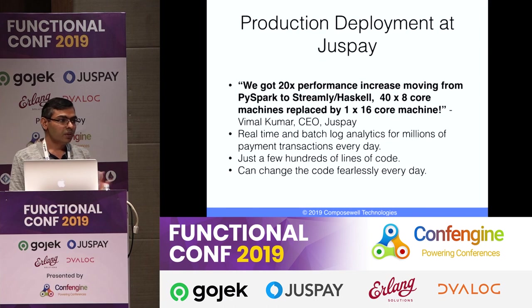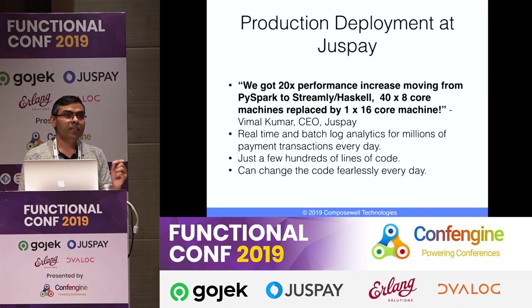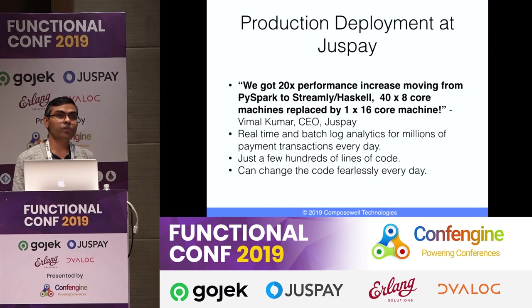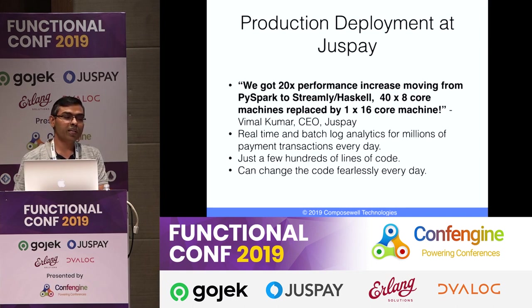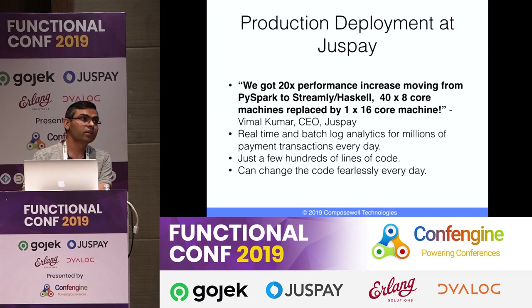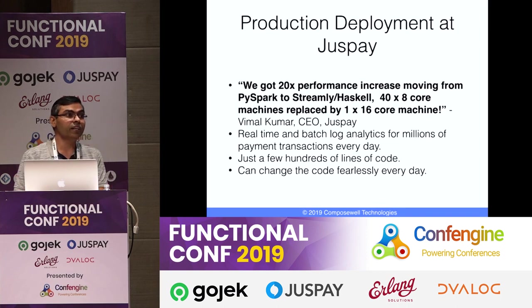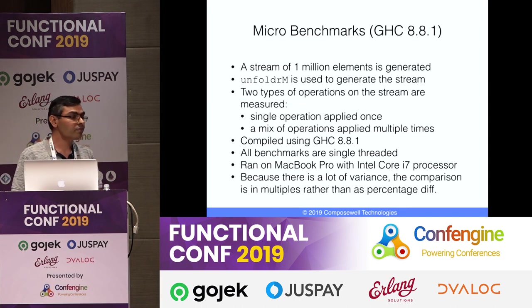On performance: there is a production deployment at JustPay where they got a 20x performance increase — moving from 40 to 8-core machines to a single 16-core machine after using Haskell and Streamly. Previously using PySpark, they now do real-time and batch log analytics for millions of payment transactions every day in just a few hundred lines of code, and can change the code fearlessly and deploy the same day.